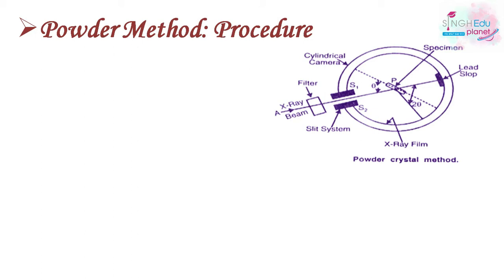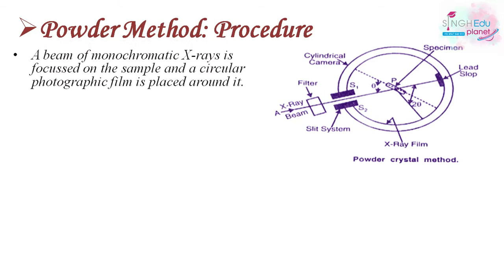Now let's look at the procedure. First, we produce X-rays and focus a beam of monochromatic X-rays on the sample. To focus the beam on the sample, we pass it through a filter and then through slits, and this focused beam is then projected onto the sample.